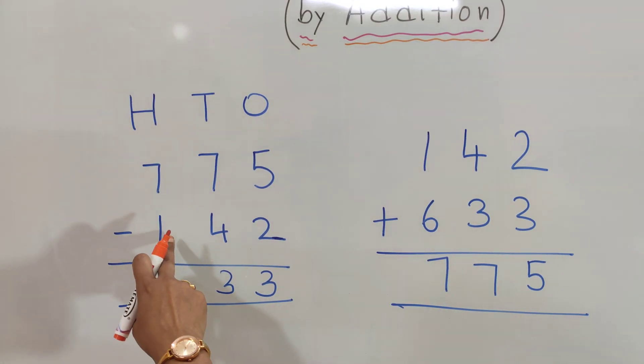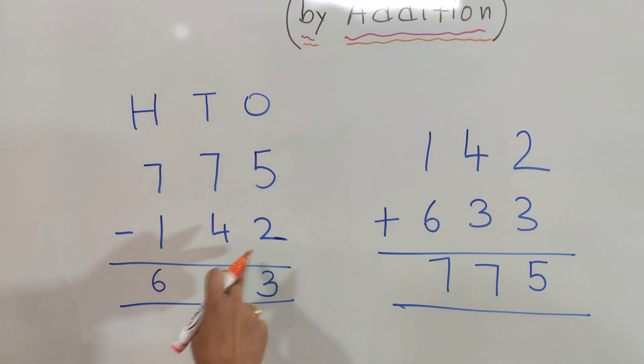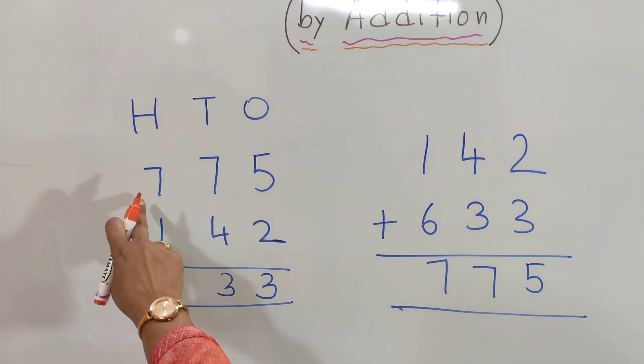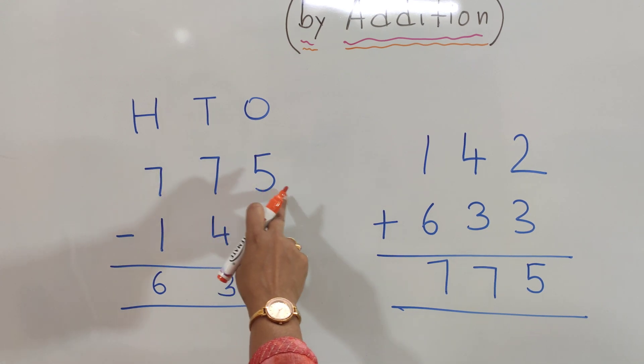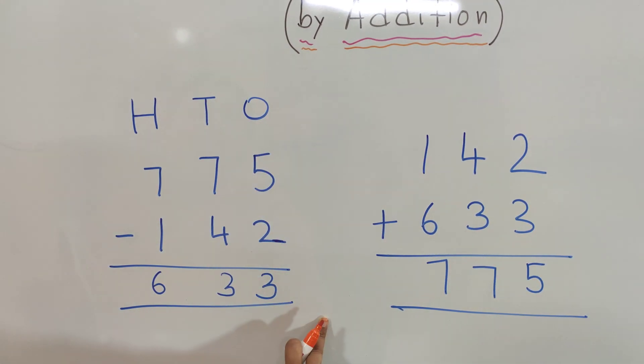Simply, if we add 142 and 633 and get our answer 775, then our subtraction is correct.